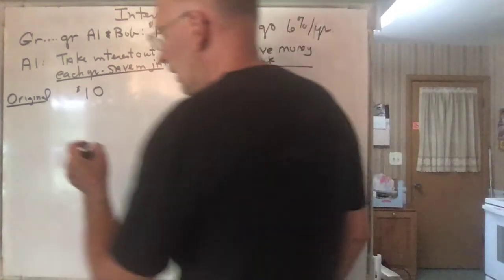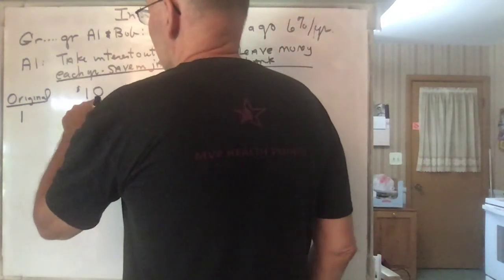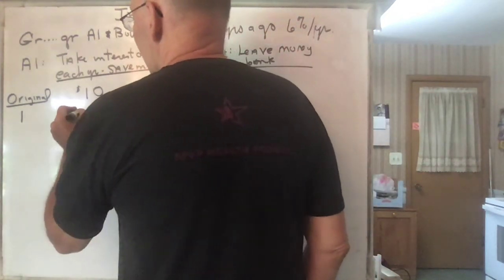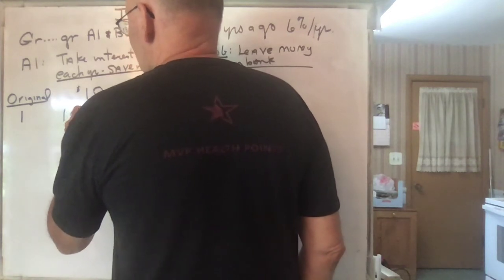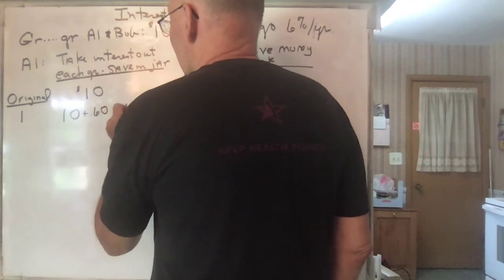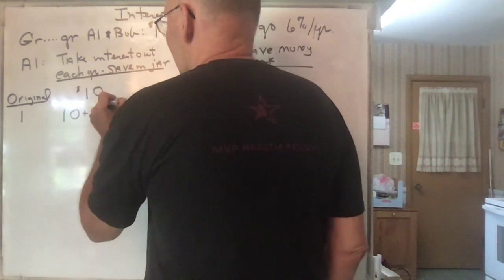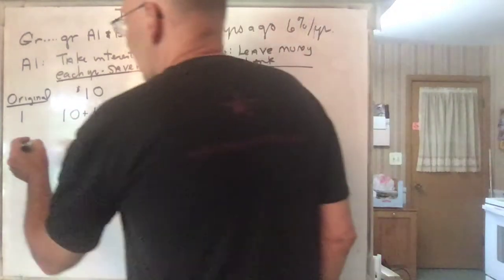So let's see what happens to these two strategies. At the end of one year, what's going to happen to Al? He's going to have the $10 plus the 60 cents, and so he's going to be at $10.60 at the end of the first year.